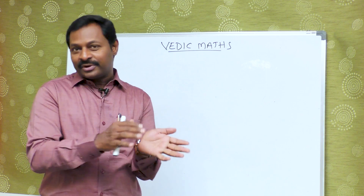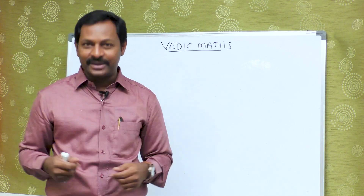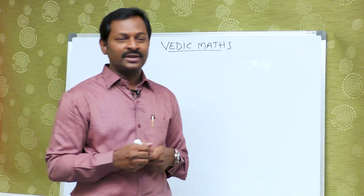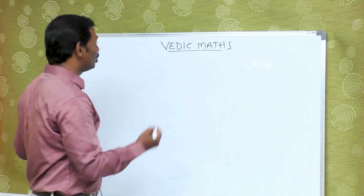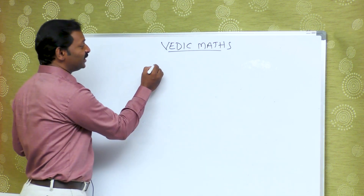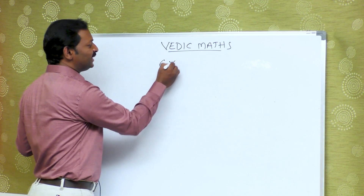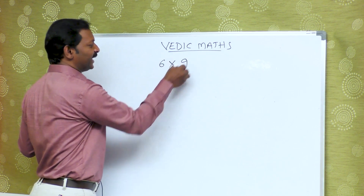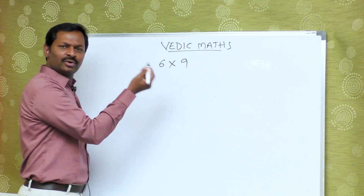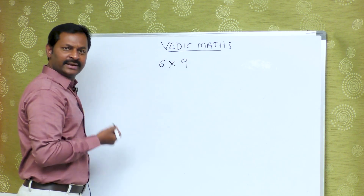Today, we are going to learn how to make a 9. In the last episode, we covered 6 multiplied by 9. One number, one is 9.